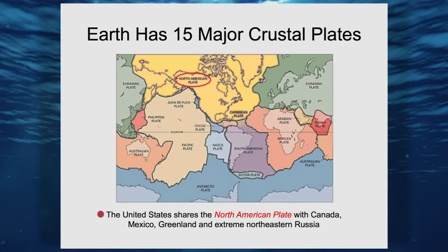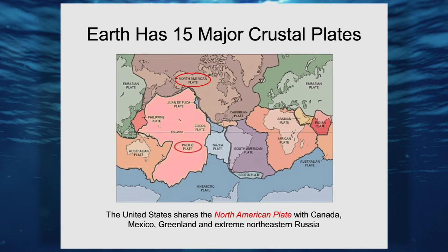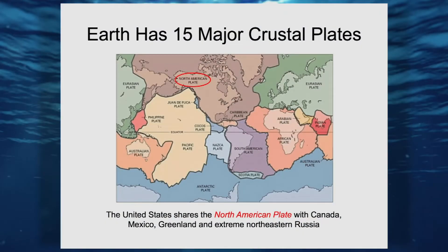We share the North American plate with the extreme eastern part of Russia, all of Canada, all of Mexico, and Greenland. There are various other crustal plates — let me call your attention to this very large yellow Pacific plate, which goes around just about the entire Pacific Ocean. I'll be coming back to that, especially when we show where the earthquakes occur. So we've got 15 major crustal plates, and you see them here.